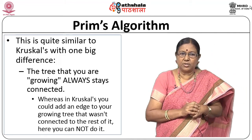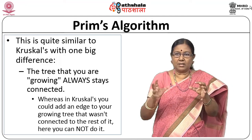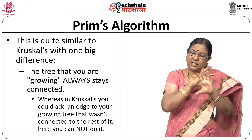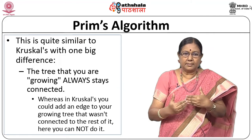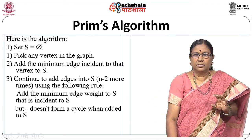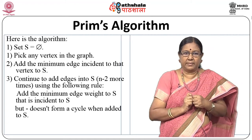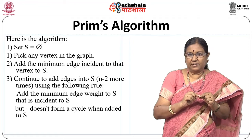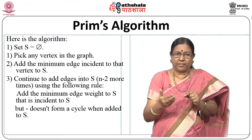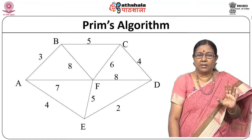In Kruskal's you could add an edge to your growing tree that was not connected to the rest of it. Here you cannot do that — you will add only when there is a connection. In Kruskal's this algorithm depends on the minimum edge, so you can have two disconnected trees that you later connect. Here the algorithm starts with an empty set, picks any vertex from the graph, adds the minimum edge incident to that vertex to set S, and continues adding edges N minus 2 more times using the rule: add the minimum weight edge to S that is incident to S but does not form a cycle.